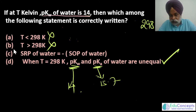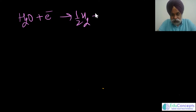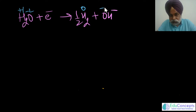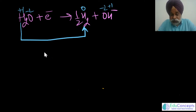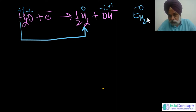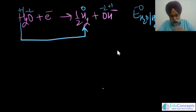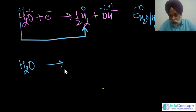Now let me discuss the SRP of water, which is also relevant to question one. SRP of water means water takes an electron and changes to H₂ and OH⁻. In water: H is in +1, O is in −2. In the products: H goes to 0 oxidation state — so hydrogen undergoes reduction. The reduction potential of water has a value of −0.826 V.